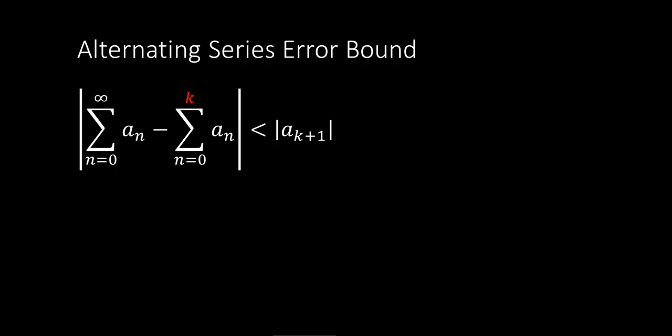One thing we've learned already is something called the alternating series error bound. And to summarize, we can capture it in this expression here. Given an infinite series, so that's this expression here, a sub n, n between 0 and infinity.